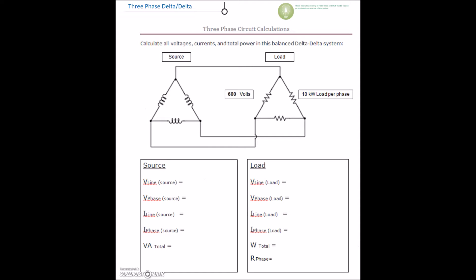Next three-phase calculation. This one is a delta source and a delta load. Here this is the secondary of a transformer. We have no idea what the primary is — we're not concerned with that whatsoever.